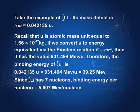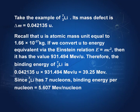Take the example of lithium, which has 6 nucleons. The mass defect found in an earlier table is 0.042135 u. Then Δm multiplied by c² gives us the binding energy. One atomic mass unit in terms of energy is 931.494 MeV. Since there are 6 nucleons in lithium, the binding energy per nucleon is 39.25 divided by 6, which is 5.607 MeV per nucleon. So you take the mass defect, multiply by c², and divide by the number of nucleons.